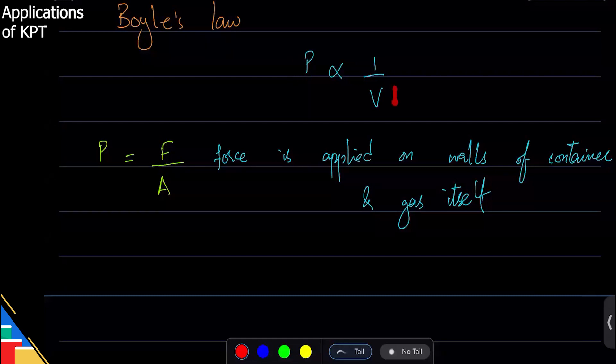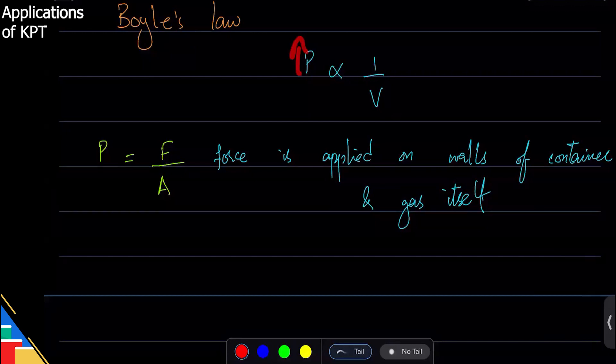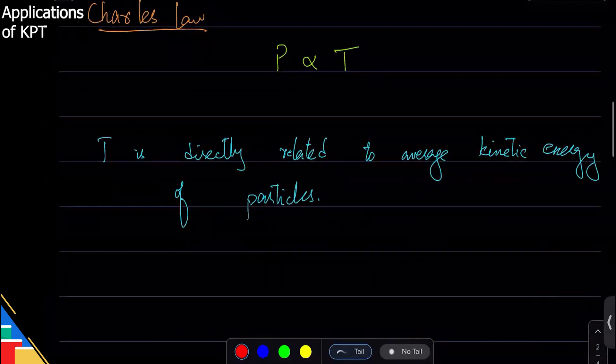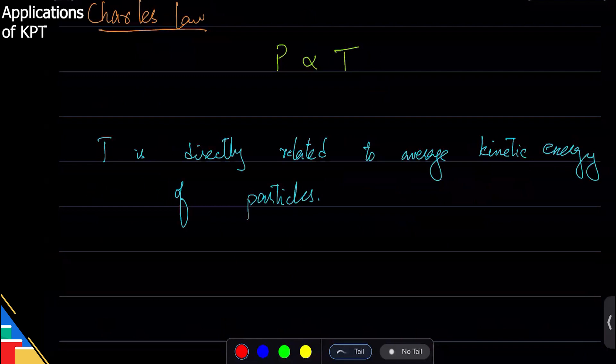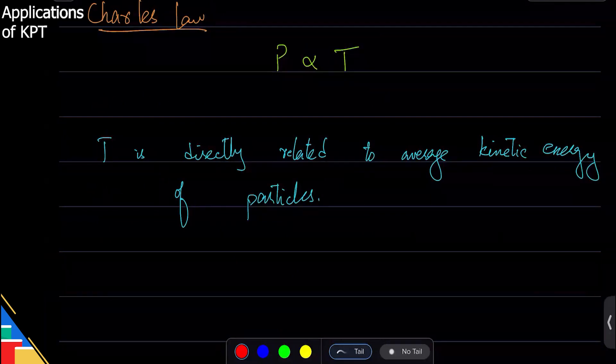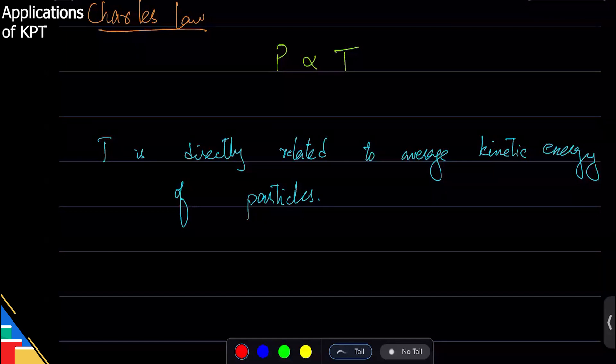If you decrease the volume, you bring them close to each other, they will collide more. And Charles law is about temperature. What is temperature? It depends on average kinetic energy. So if particles have more kinetic energy they'll move more, so when they move more they hit each other more which is why pressure increases. If they move less they collide each other less, which is why pressure decreases.